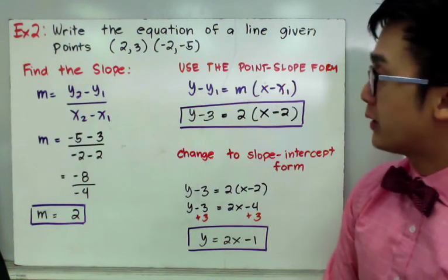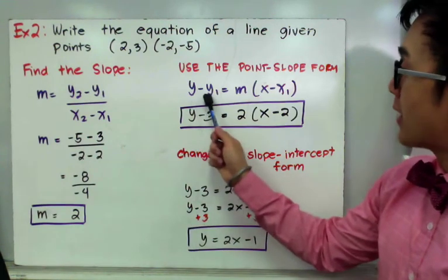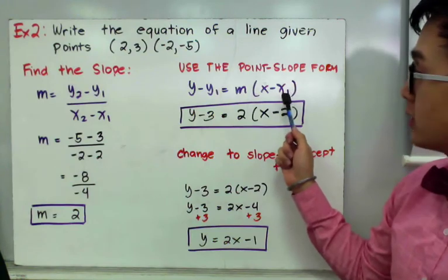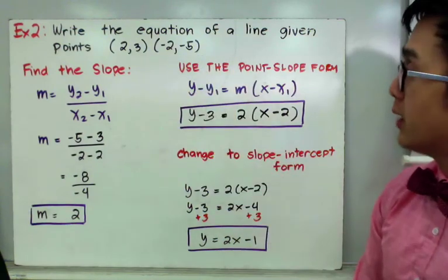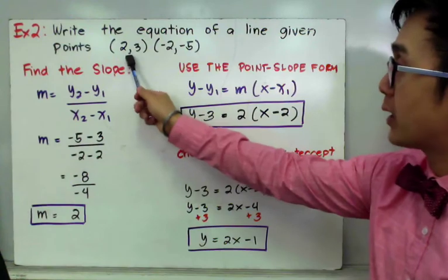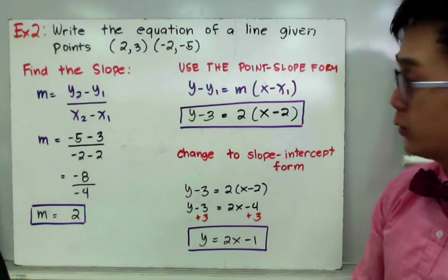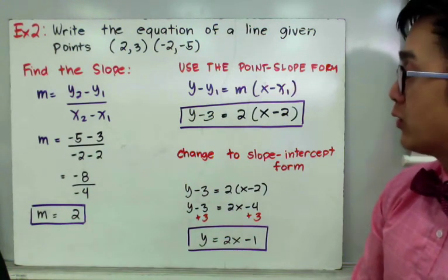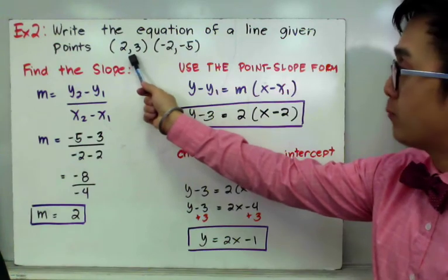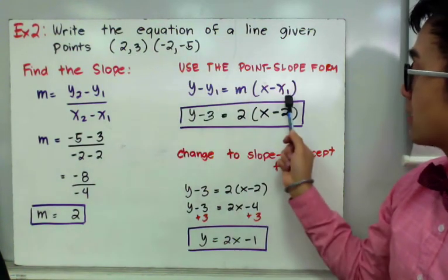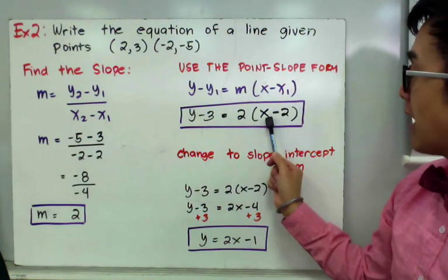Now that we have the slope, we use the point-slope form y minus y-sub-1 equal to m times x minus x-sub-1. We only need one of the two given points. You can use either (2, 3) or (negative 2, negative 5) and you will get the same result. Using (2, 3) as the given point and replacing y1 and x-sub-1, we have y minus 3 equal to 2 times x minus 2 as our point-slope form of the equation.